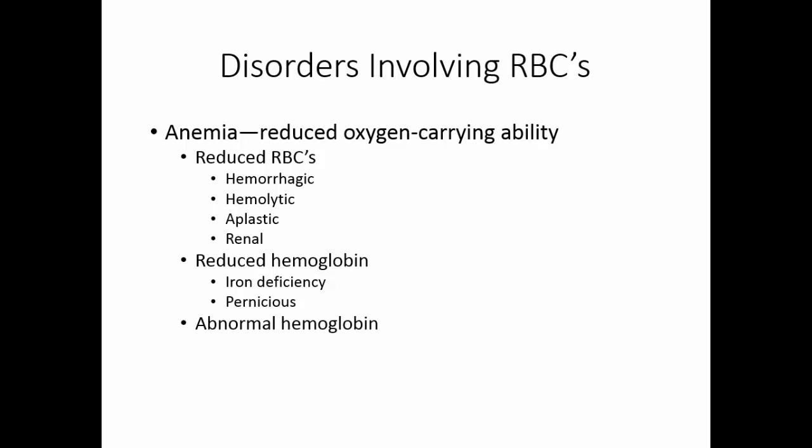Abnormal hemoglobins are typically the result of a genetic disorder. Thalassemias are hemoglobin disorders seen primarily in people of Mediterranean descent where the hemoglobin produced does not carry oxygen appropriately. Sickle cell anemia involves hemoglobin S, which does not stay soluble if oxygen levels decrease. In low-oxygen situations, red blood cells lose their biconcave shape and flexibility and go into a sickle shape. These sickle cells are fragile and rupture easily — a hemolytic anemia — and they block capillaries, causing tissue infarctions.